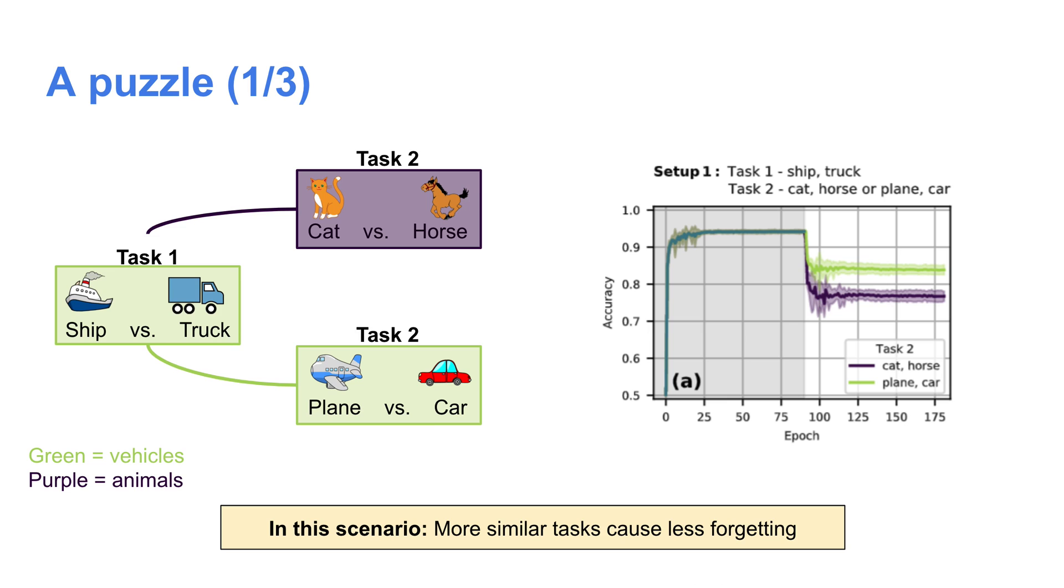Clearly the categories of plane and car are semantically much more similar to the original categories of ship and truck than are the animals. In this case, we see in the graph on the right that there is significantly more forgetting when the network has to switch from classifying vehicles to classifying animals.